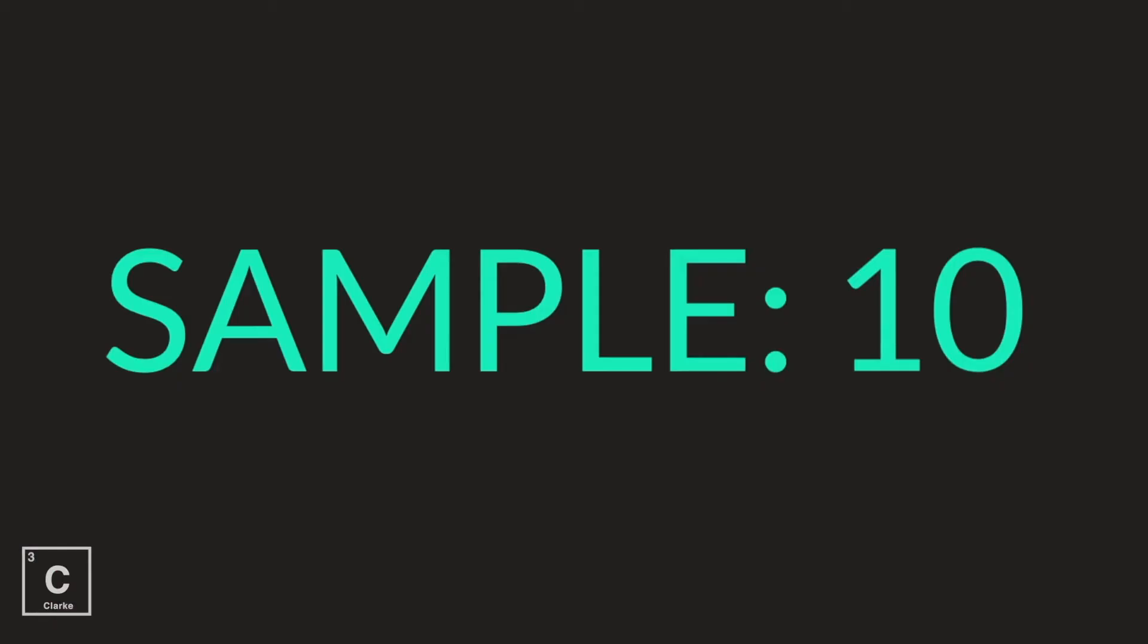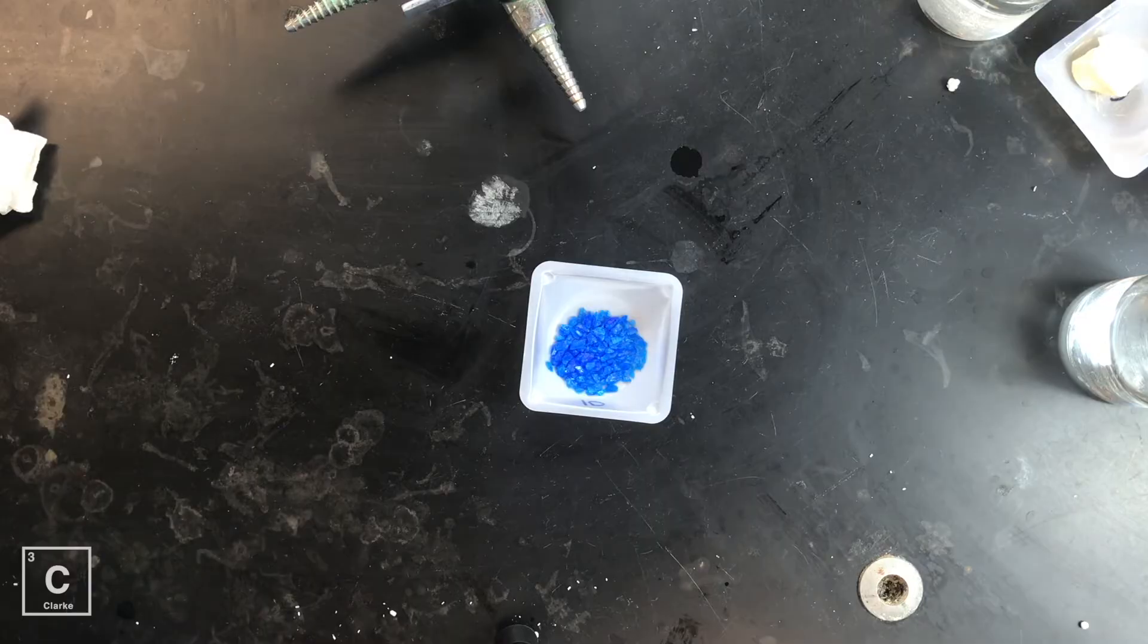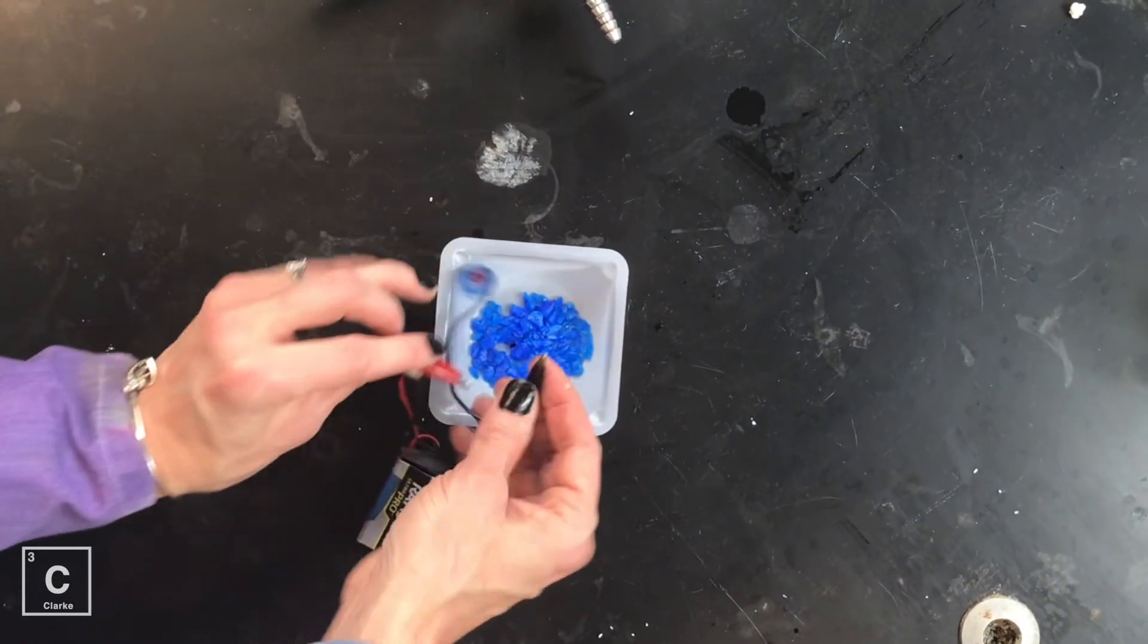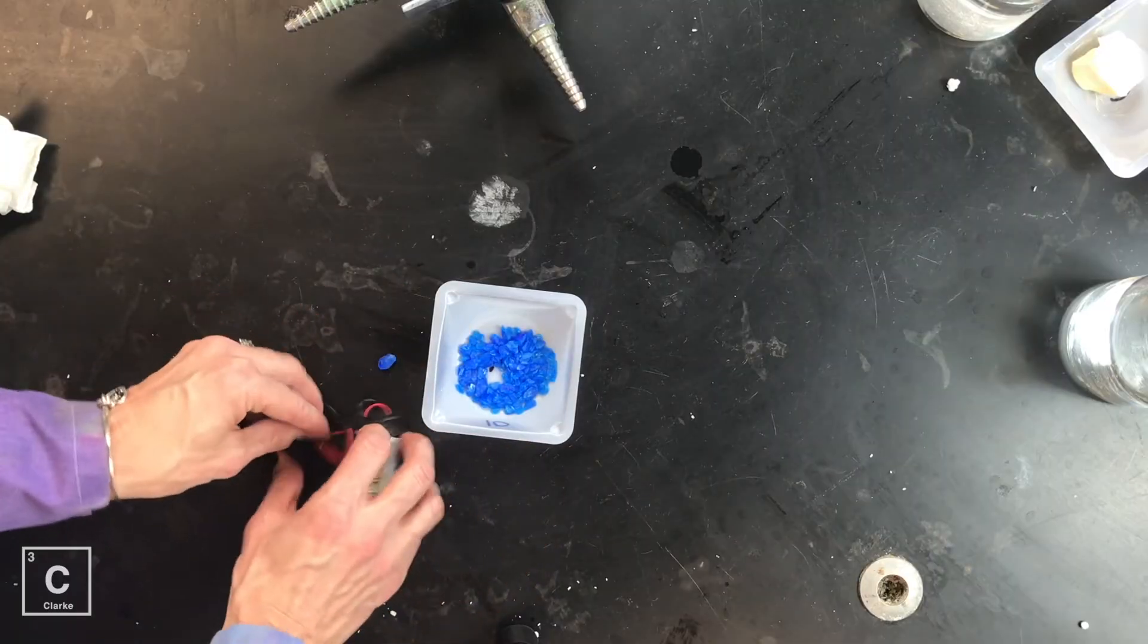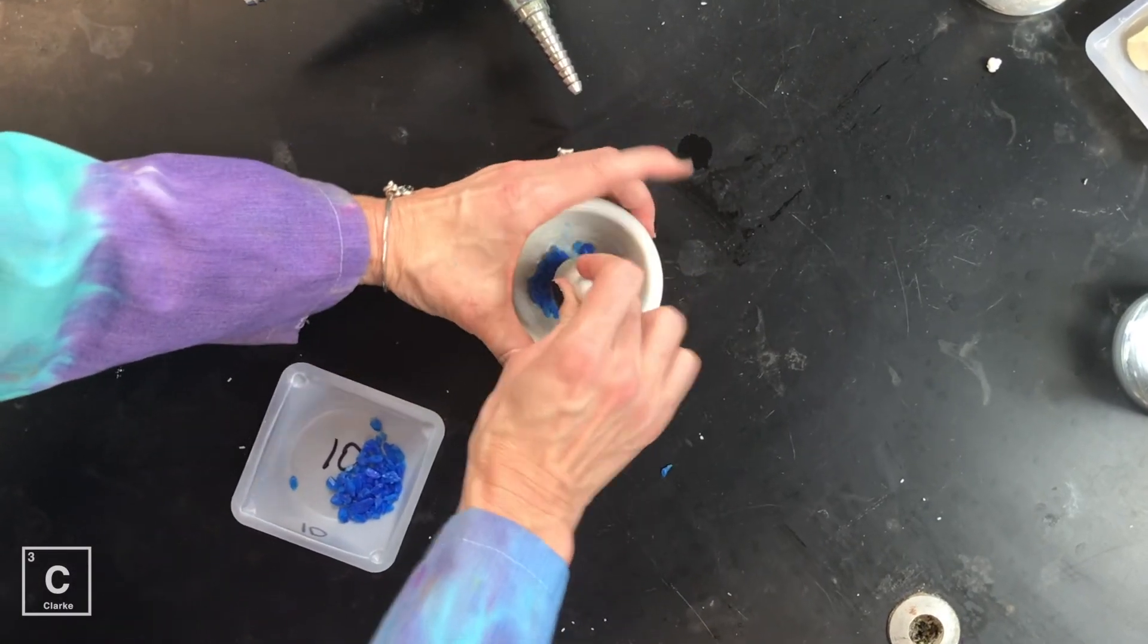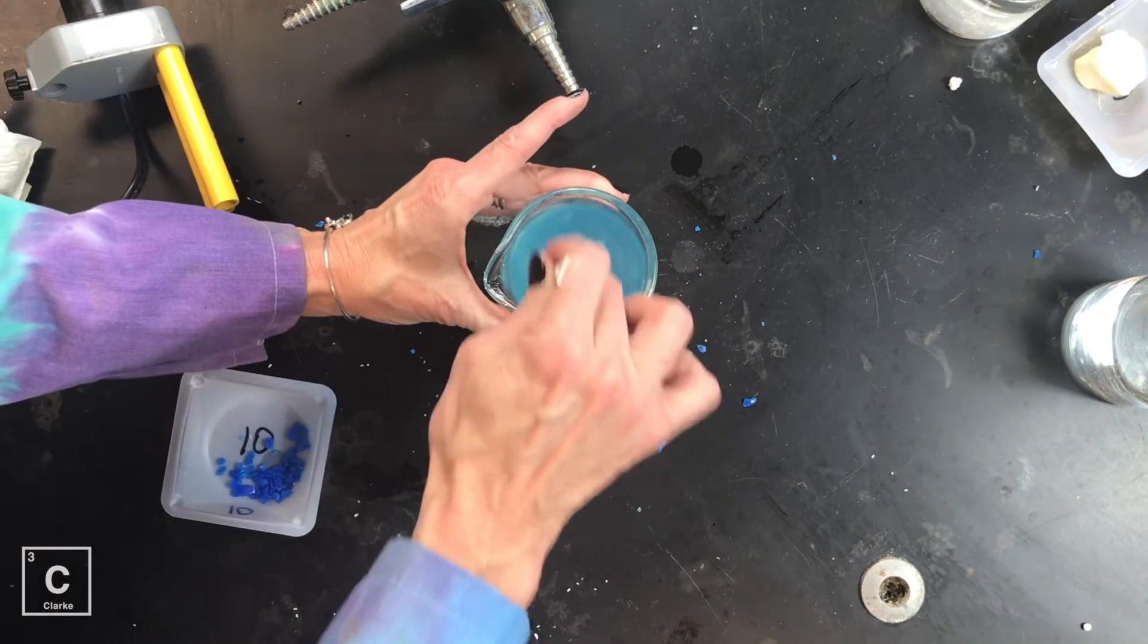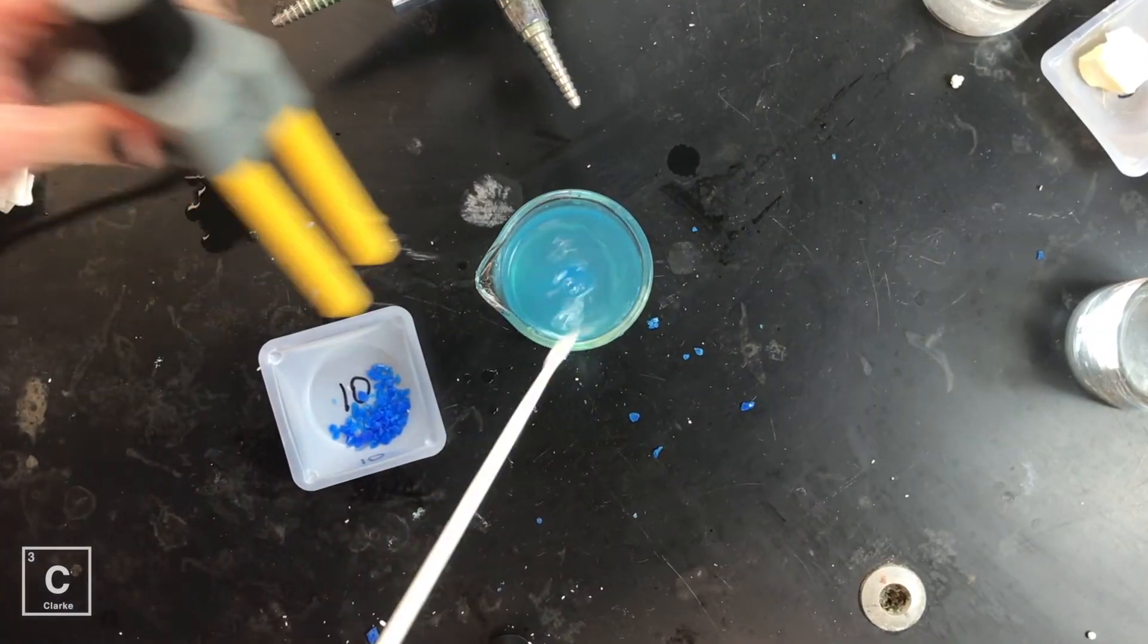Okay, last sample, sample 10, let's look at its appearance, let's see if it conducts as a solid, let's look at a positive result again. Can you see that? Okay, malleable or brittle. And does it dissolve in water? Here we go.